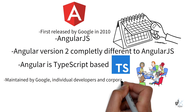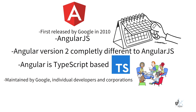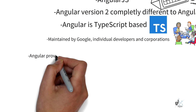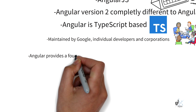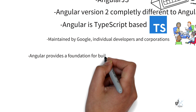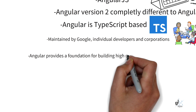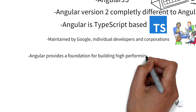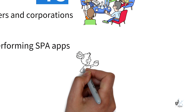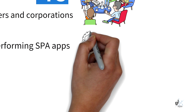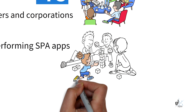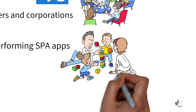Angular is a TypeScript-based, free and open-source, single-page web application framework created by Google. It is maintained by the Angular team at Google, a community of individuals and corporations. Angular is a complete rewrite of the framework built by the same team that built AngularJS. Its primary use is to provide a framework for developers to develop high-performing UI interaction functionality for single-page applications on the web. Angular is a full front-end framework which provides a consistent structure so that developers don't have to build code from scratch.